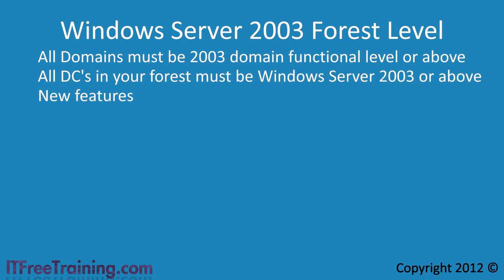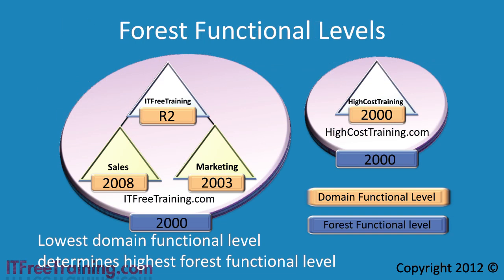The first feature gained by having Windows Server 2003 forest functional level is the forest trust feature. A forest trust allows you to share resources between two forests easily. For example, if I want to put a forest trust between high cost training and IT free training, I would first need to raise the forest level of both forests to Windows Server 2003. In the IT free training forest, the lowest domain functional level is Windows Server 2003, so all I need to do is raise the forest level to Windows Server 2003 — no more work is needed because all domains are already at that level or higher.